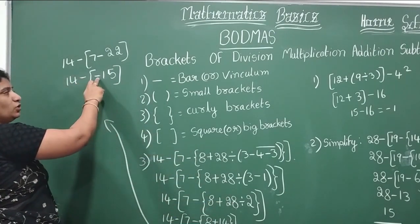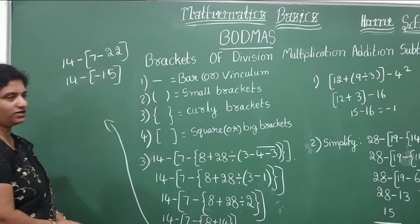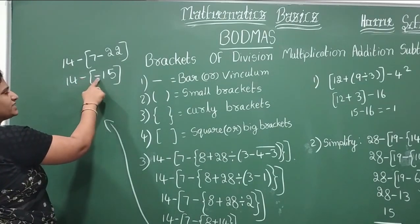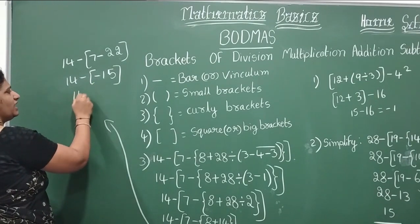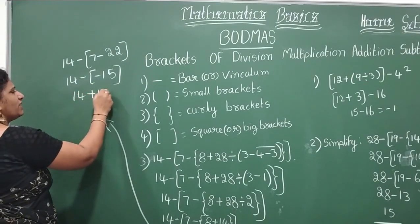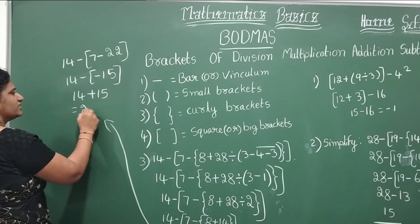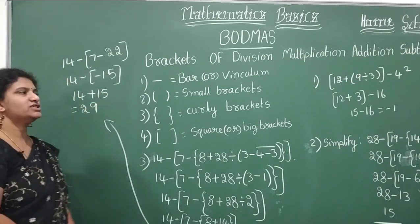So now see here what we have done? Division, addition. Now you have a multiplication with the sign. So look here minus into minus. What it will be? Plus. 14 plus 15. What is answer? 29.